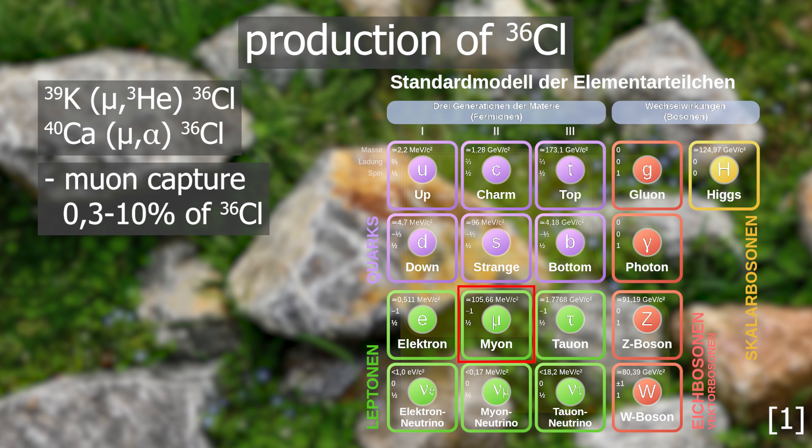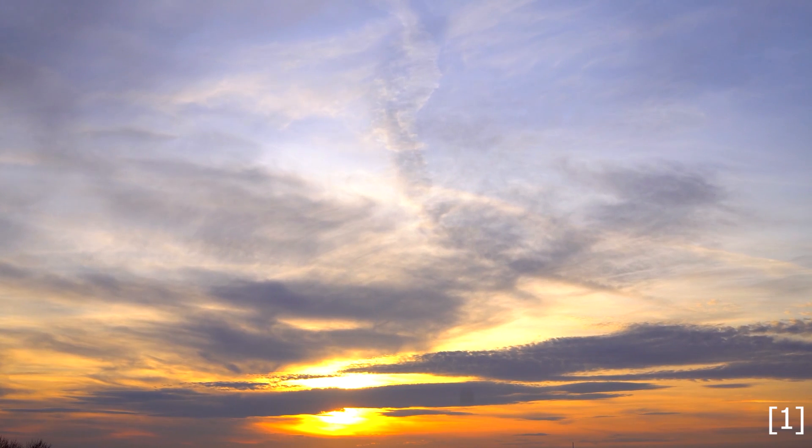These muons are part of the secondary cosmic radiation and can reach the Earth's surface despite their average lifetime of 2.2 microseconds. This is due to their speed.